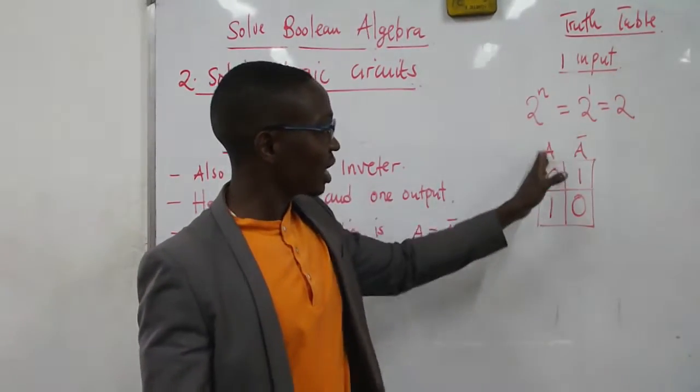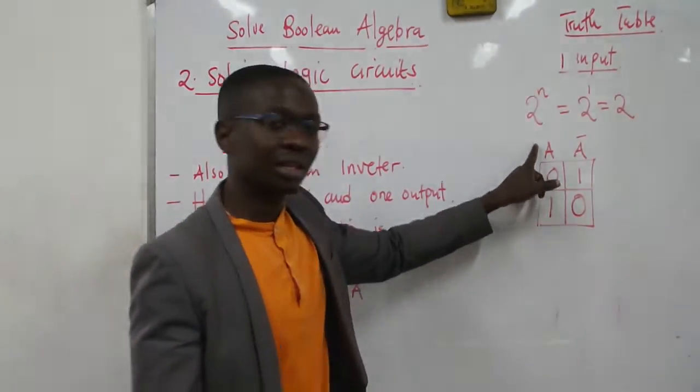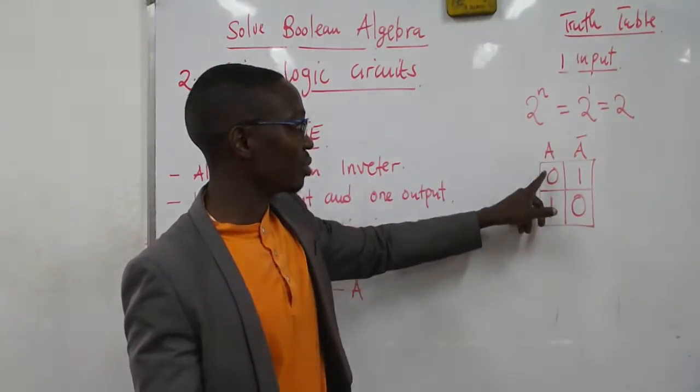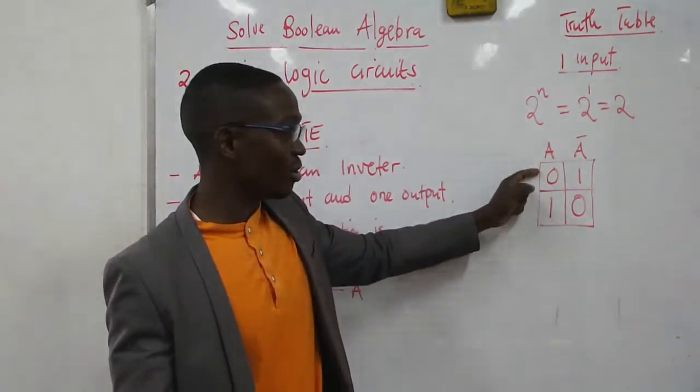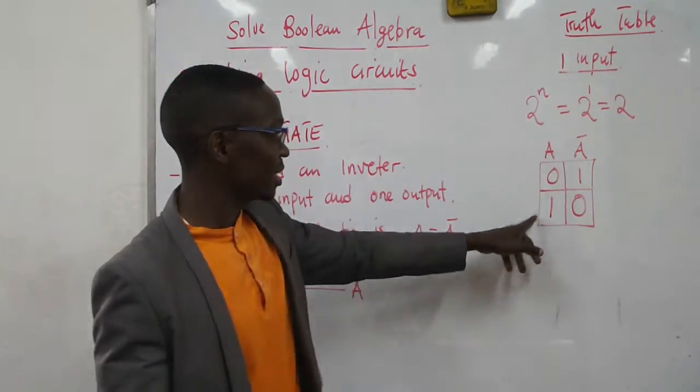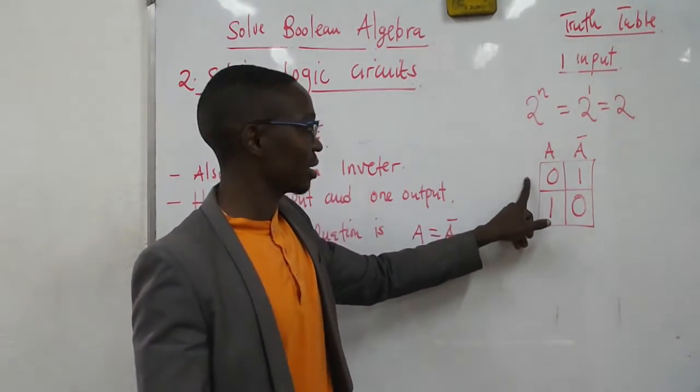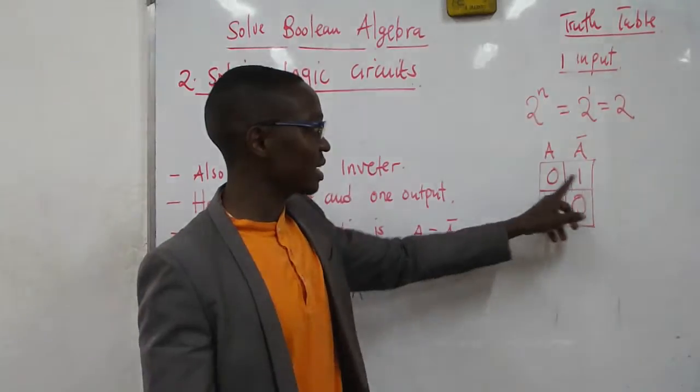So you have the input there which is A. The possible combination is either the input is a 0 or a 1, the OFF or the ON signal. So if the input is a 0, 0 when it's inverted, it will give us a 1.